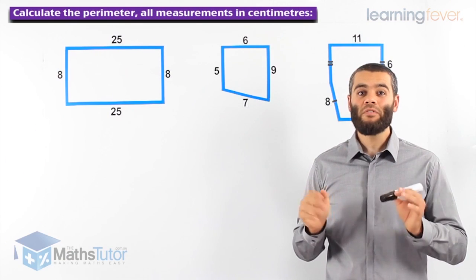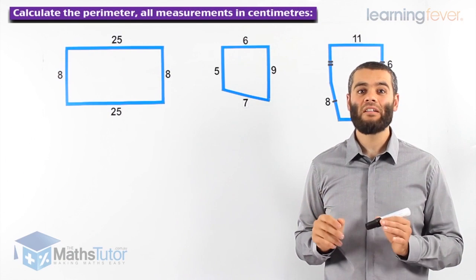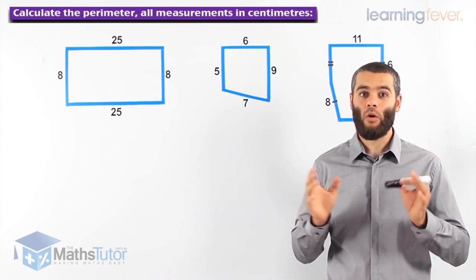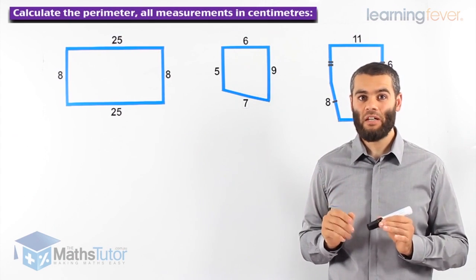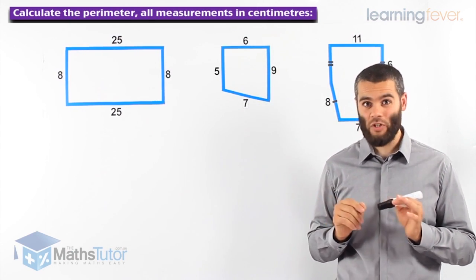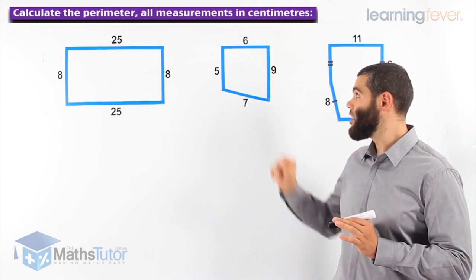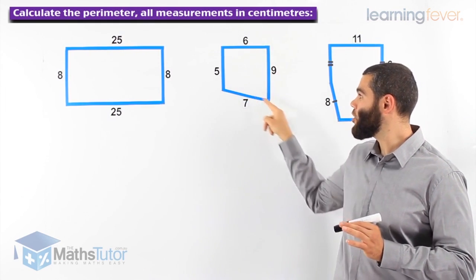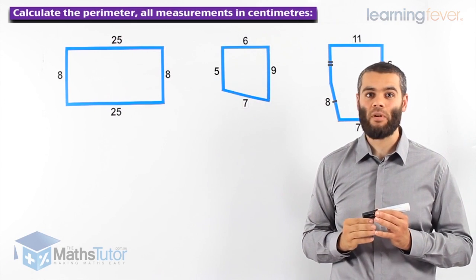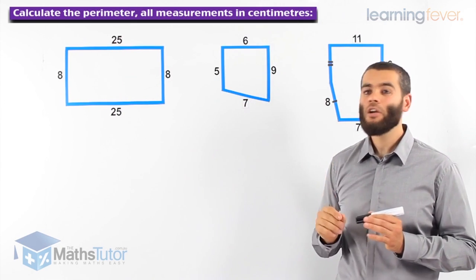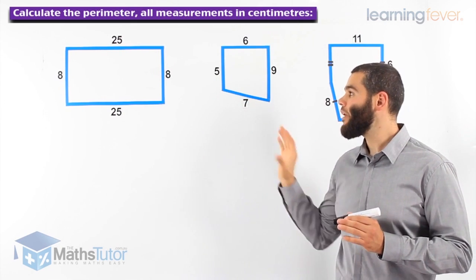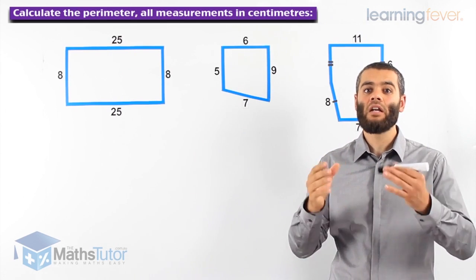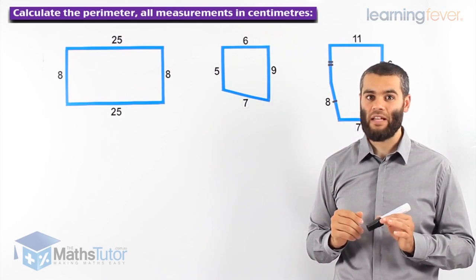Hey guys. I'm going to show you how to calculate and solve questions that involve perimeter. Now what is perimeter? Perimeter is the boundary of a shape. So we're working out the boundary and calculating the total boundary around any shape. Now here we have different types of shapes — they are simple, and we are going to do more examples that are a little bit more complicated than that.